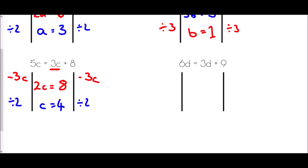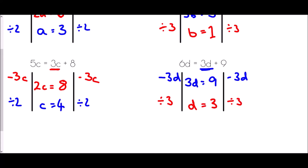Lastly, 6d equals 3d plus 9. The smallest amount of d is 3d, so I subtract 3d from both sides. 6d take away 3d is 3d, and on the right hand side I'm left with just 9. Then to get d all on its own, divide by 3 — so d equals 3.